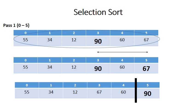So on pass one, the selection sort will go from element zero to element five. It will identify 90 as the maximum one. It will see that the 90 and the 67 needs to swap, and then it will swap the 90 and the 67.